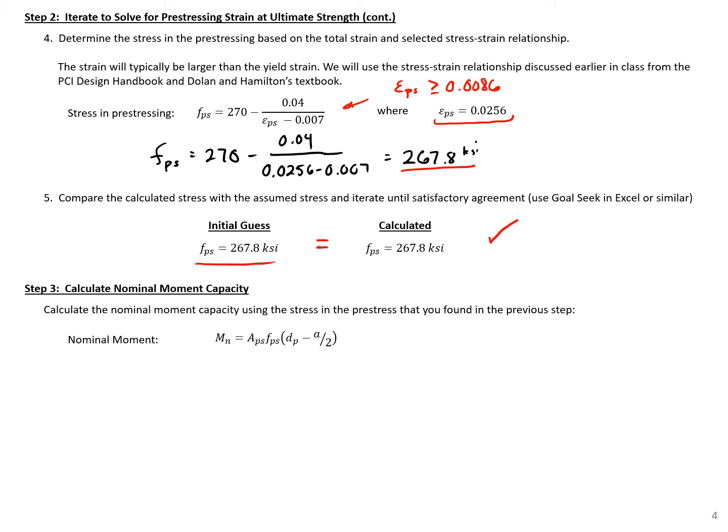We can now calculate our nominal moment using this stress that we found. So our MN is going to be equal to our pre-stress area 0.918 square inches times that stress that we just found 267.8 times the lever arm between the centroid of our compression block and the centroid of our strands 20 inches minus A over 2, 2.01 divided by 2. And here we'll find our MN equal to 4,671 kip inches. So this is our nominal moment capacity.